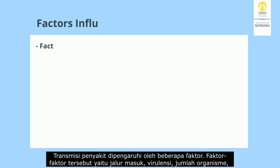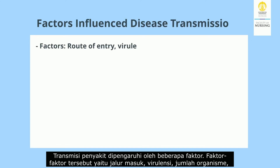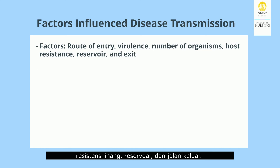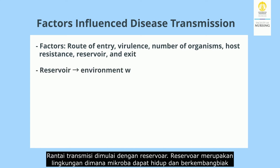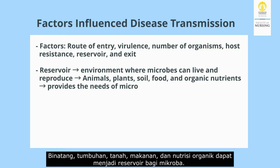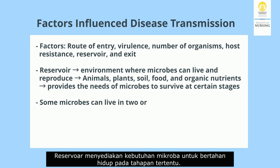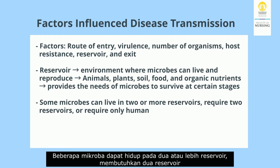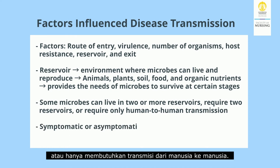Disease transmission is influenced by several factors: route of entry, virulence, number of organisms, host resistance, reservoir, and exit. The transmission chain starts with the reservoir — an environment where microbes can live and reproduce. Animals, plants, soil, food, and organic nutrients can all be reservoirs for microbes. Some microbes can live in two or more reservoirs, while others require only human-to-human transmission.